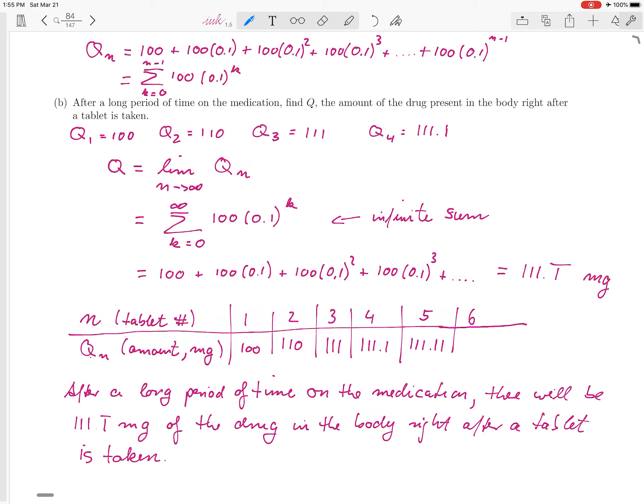So again, after a long period of time on this drug, you keep taking a 100 milligram dose every three hours, over and over again, then you can expect that the total buildup of the drug in your body is 111.1 repeating milligrams.